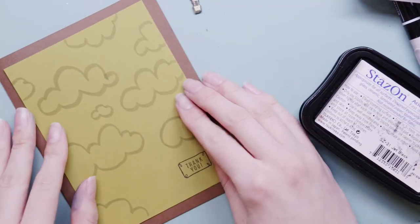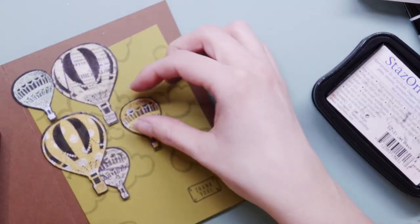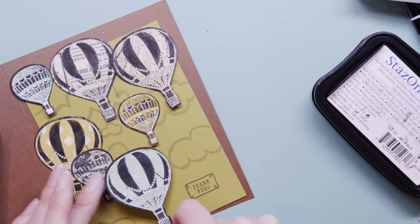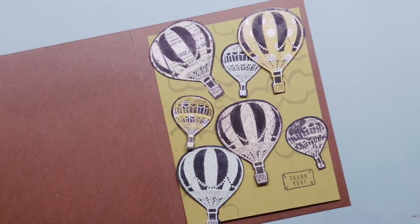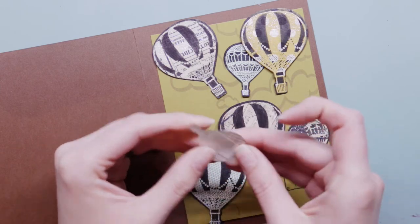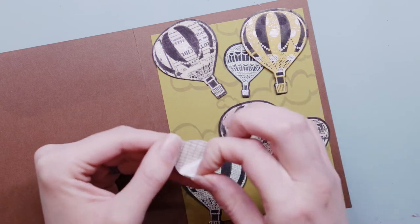I'm going to now piece it all together. I chose colors that I thought went with the paper that I chose for my balloons. Now that I've decided where everything is going to go, I'm going to use some double-sided tape and just tape it into place.